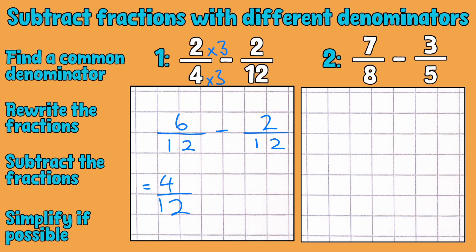Okay let's move on to our next example. So we've got 7 eighths subtract 3 fifths. Now it's a little different to the last example whereby one of the denominators isn't a multiple of the other. So we've got to do something slightly different with this type of one.